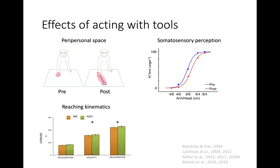The effects of tools on sensory motor body representations have been studied for about two decades. For example, there is a lot of research looking at a multi-sensory spatial representation right around the body called peripersonal space. It turns out that in monkeys and in humans, when they use a tool, this multi-sensory interface between the body and the environment actually extends out and encompasses the tool being used.